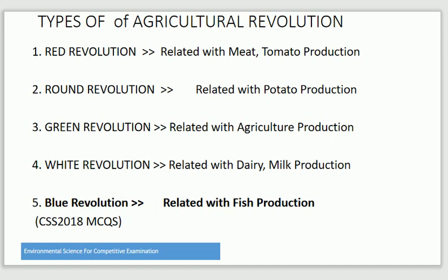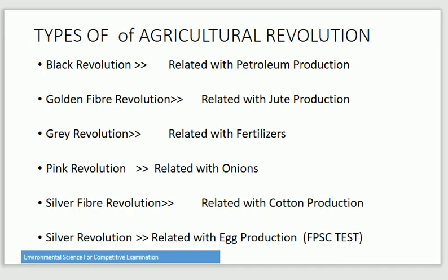Blue Revolution is related to fish production. Black Revolution is related to petroleum. Golden Fiber Revolution is related to jute production. Gray Revolution is related to fertilizers. Pink Revolution is related to onion production. Silver Fiber Revolution is related to cotton production.